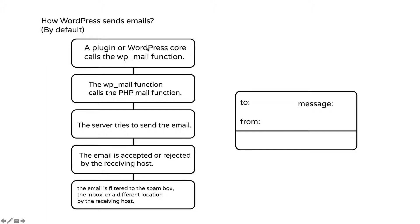Usually we don't have any problem here, because if you're using WooCommerce or a contact form plugin, they should call the WP Mail function at the appropriate times. The second step is that WP Mail calls the PHP Mail function, which is not specific to WordPress — it's a default PHP function for sending emails on every PHP server. This is the step that can be faulty a lot of the time, if the server is not working correctly. The third step is that the server tries to send the email.